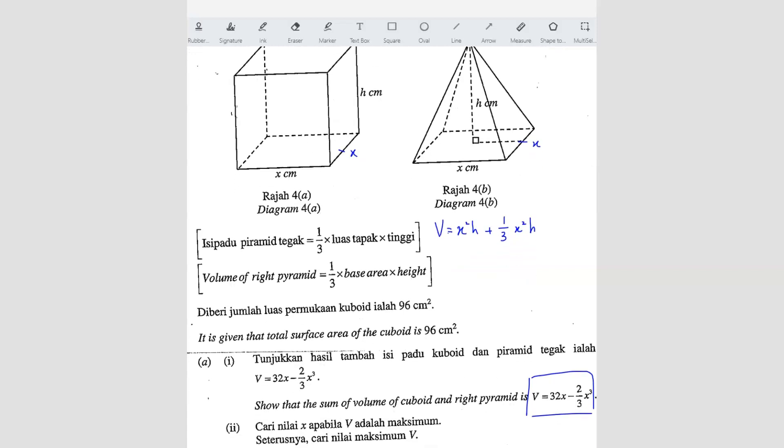The question here, they want us to prove. You notice there is no h there, so that means we have to remove the h. We have to substitute with something. Now before that, what we can do is factorize the h out. So you get x² plus 1/3 x². So that means these two can combine, you get 4/3. So it's 4/3 x²h.